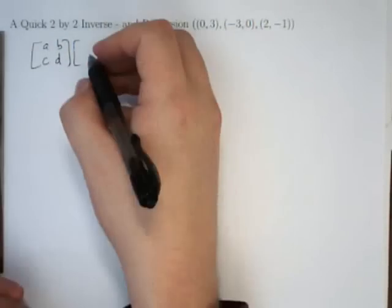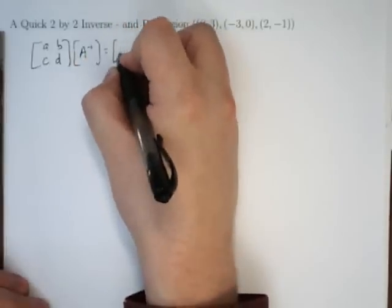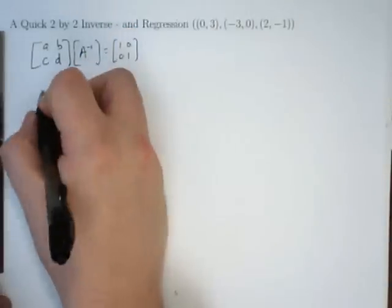So here we have a matrix and I want to multiply by its inverse to get out the identity 1001. So what is the inverse?